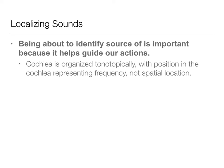We talked about the auditory cortex being organized tonotopically because the cochlea and the basilar membrane were organized tonotopically. This tonotopic organization in the cochlea really helps us with frequency location, but it doesn't give us any information for spatial location.